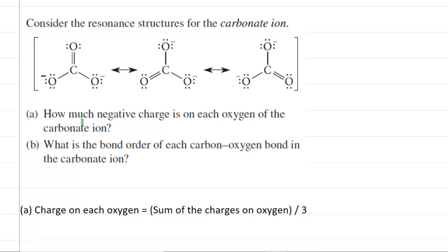In part A, we must determine how much negative charge is on each oxygen of the carbonate ion. To do this, we can select one of the three oxygens. It doesn't matter which one, because they are all chemically equivalent. So let's select the oxygen in the lower left corner of each of the three resonance structures. We'll highlight those oxygens.